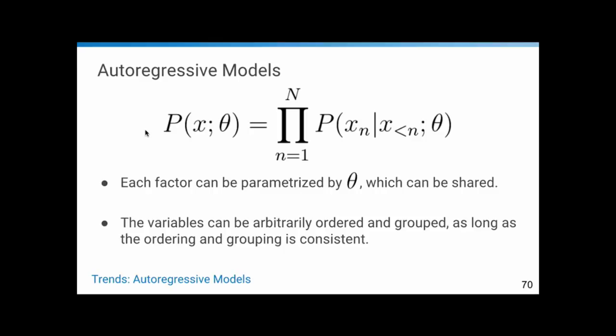What's the idea of autoregressive models? We want to use the chain rule of probability. Given a joint distribution we want to learn, we can factorize it by ordering and possibly grouping variables. As long as we're consistent in the ordering and don't violate causality, we can learn the joint distribution. Each factor can be parametrized by some theta — for example, a deep neural network — and you can have one theta per factor or share them. The main modeling choices are how to order and group the variables, and how to parametrize each factor.